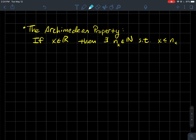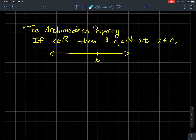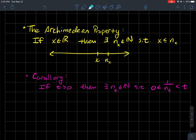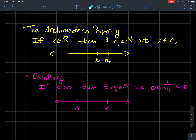The next topic is the Archimedean property. It says: if x is a real number, then there exists a natural number n_x such that x ≤ n_x. In other words, for any x on the number line, you can always find a natural number to the right of it. A corollary: for any positive number t, there exists a natural number n_t such that 0 < 1/n_t < t. No matter how small t is, we can always find a natural number large enough so that its reciprocal is closer to zero than t.